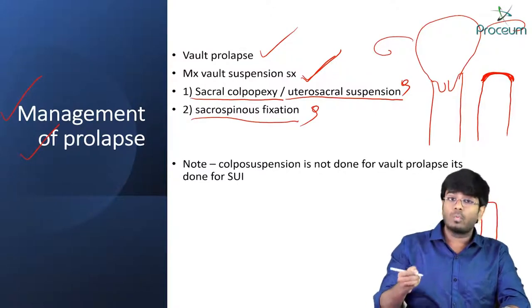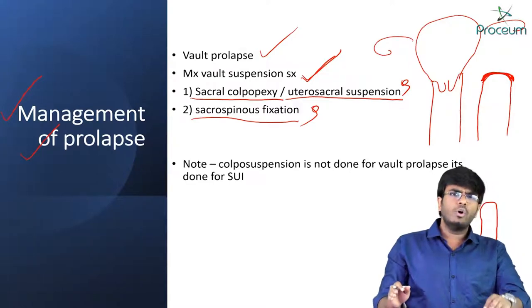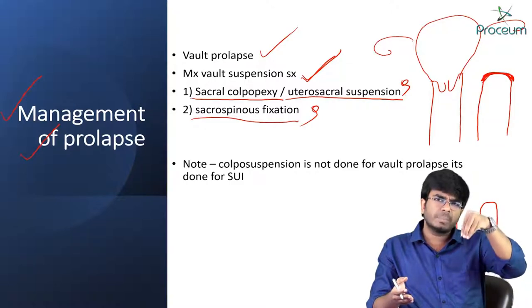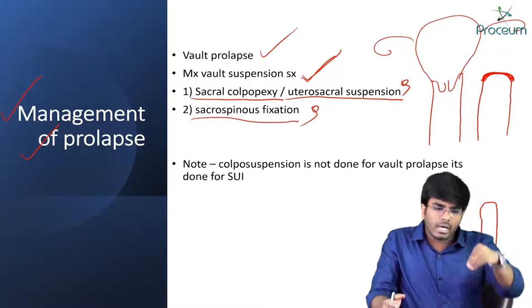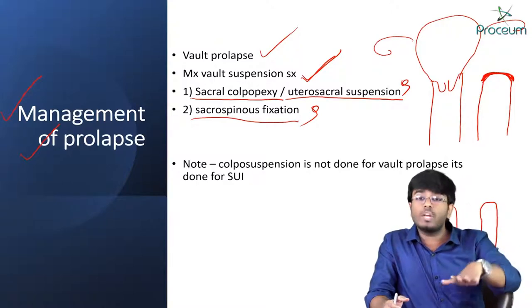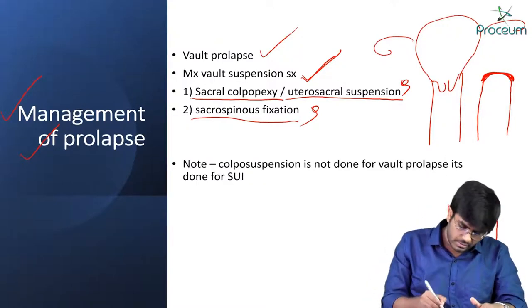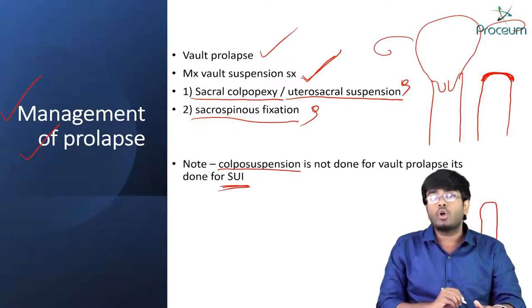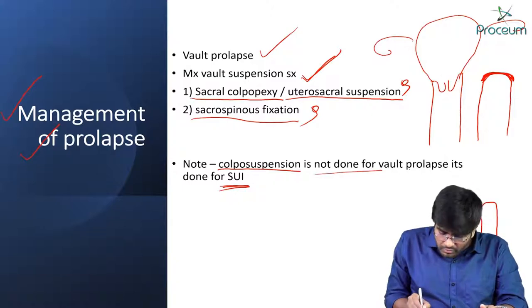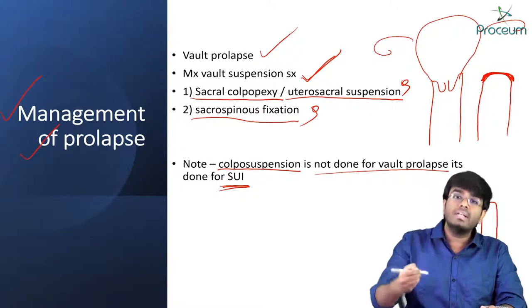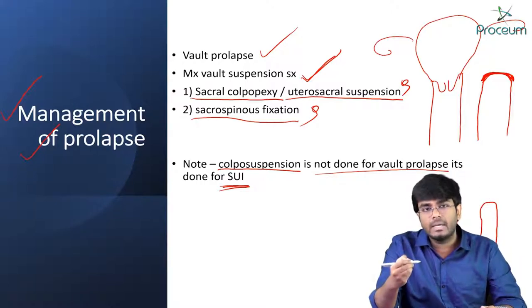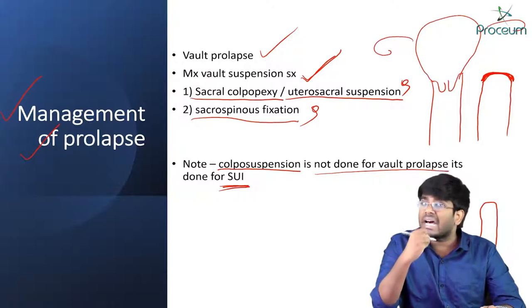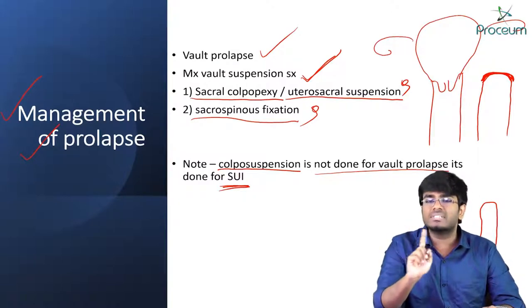An important point: many students confuse colposuspension with vault prolapse management. Colposuspension is done for stress urinary incontinence, not for vault prolapse. For vault prolapse, the surgeries are sacrocolpopexy, uterosacral suspension, or sacrospinous fixation — not colposuspension. This is a very important distinction.